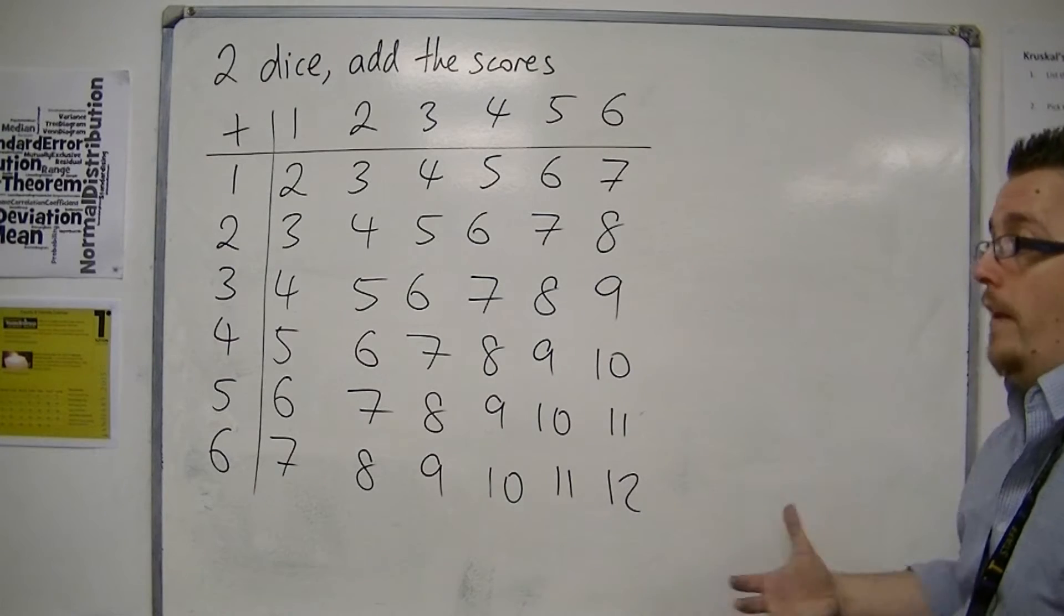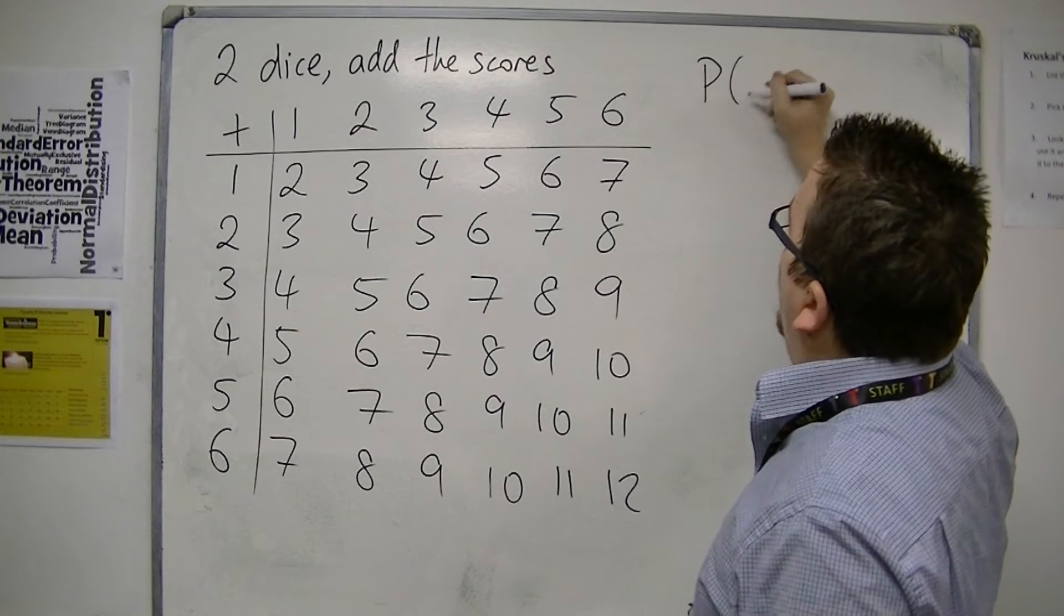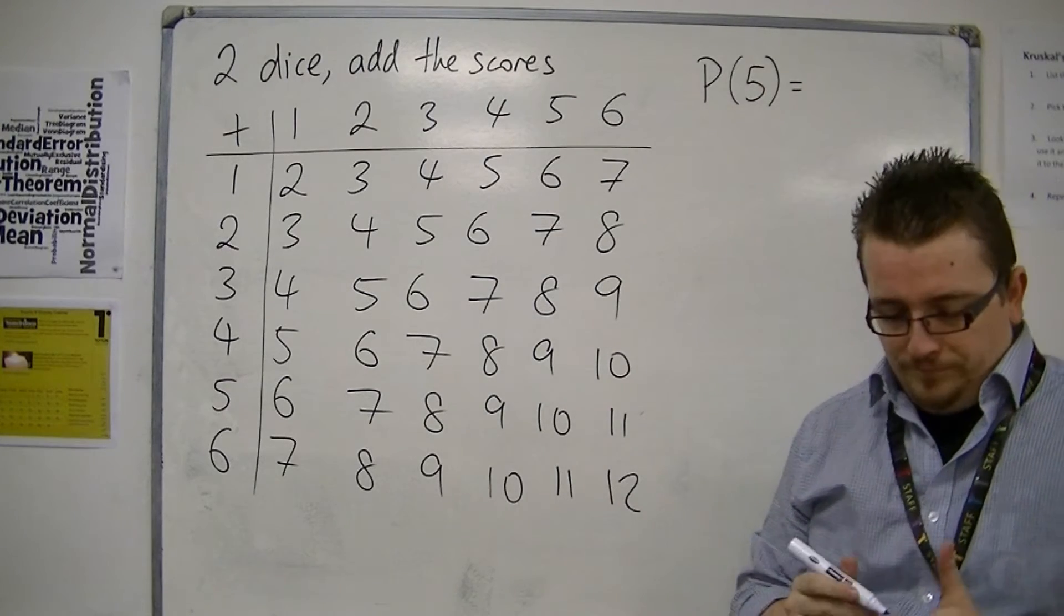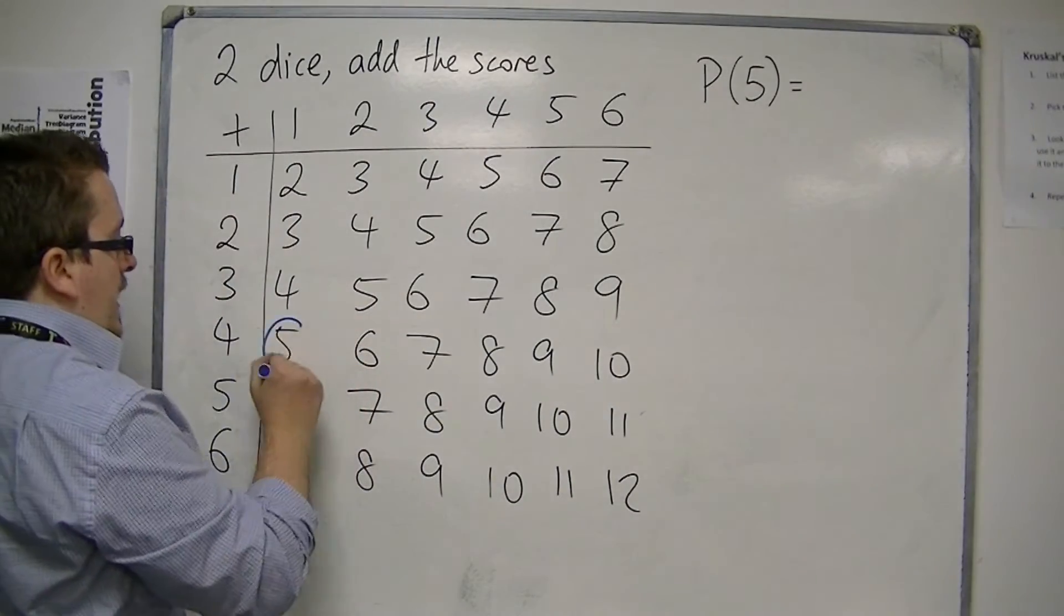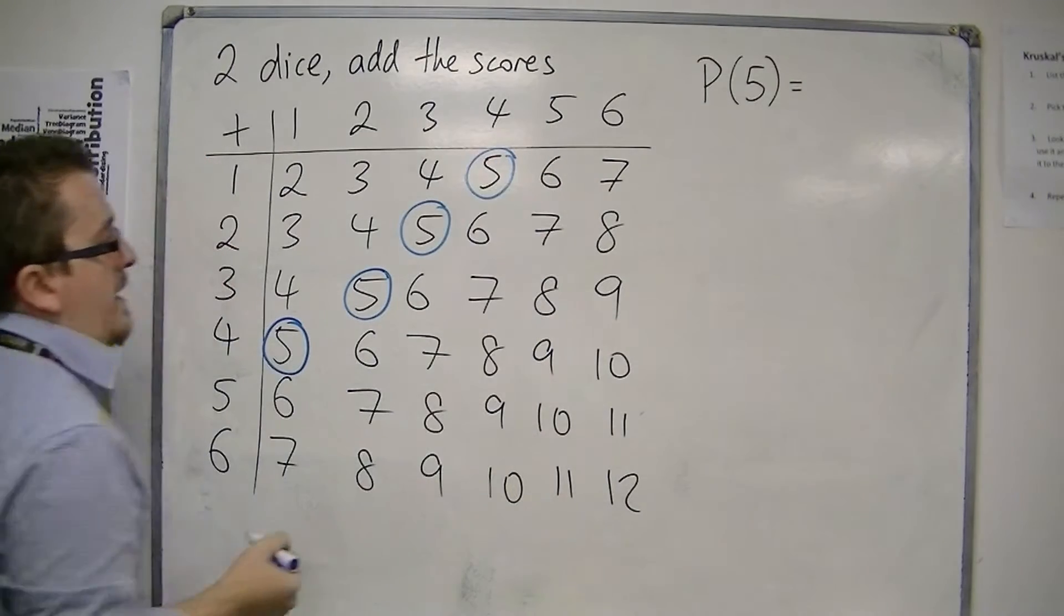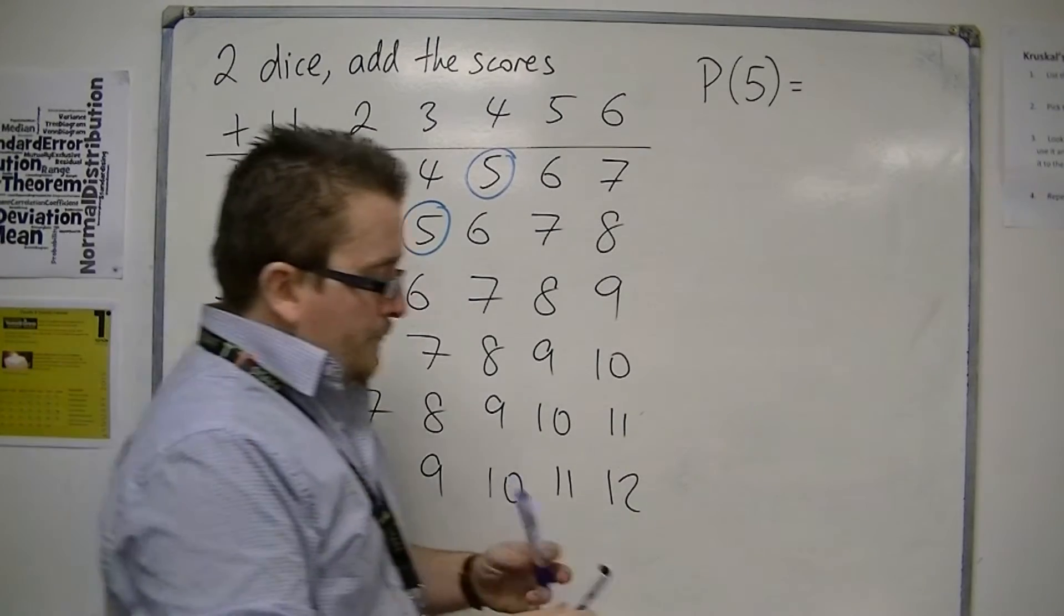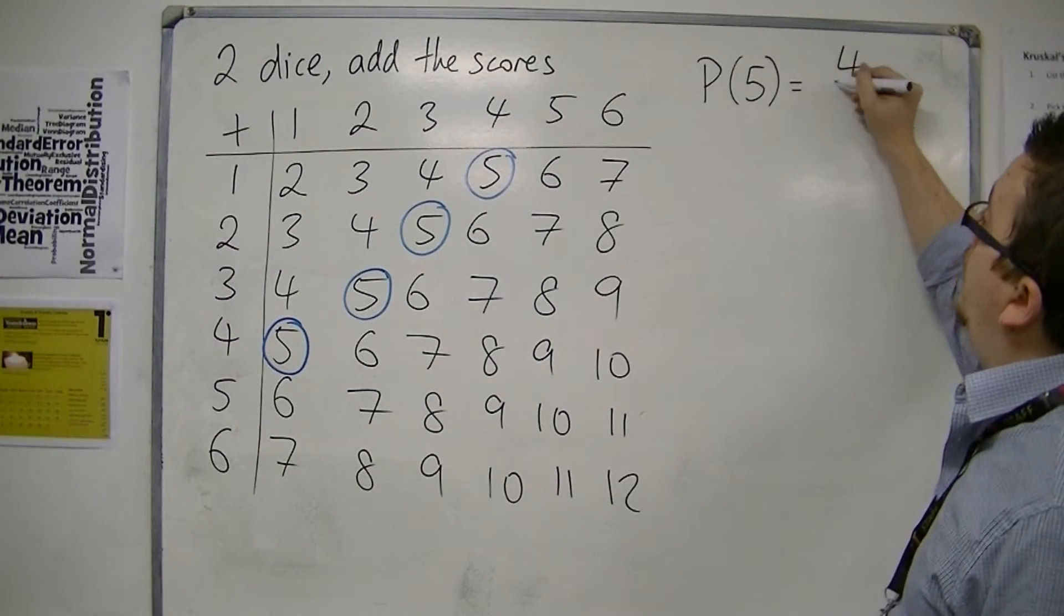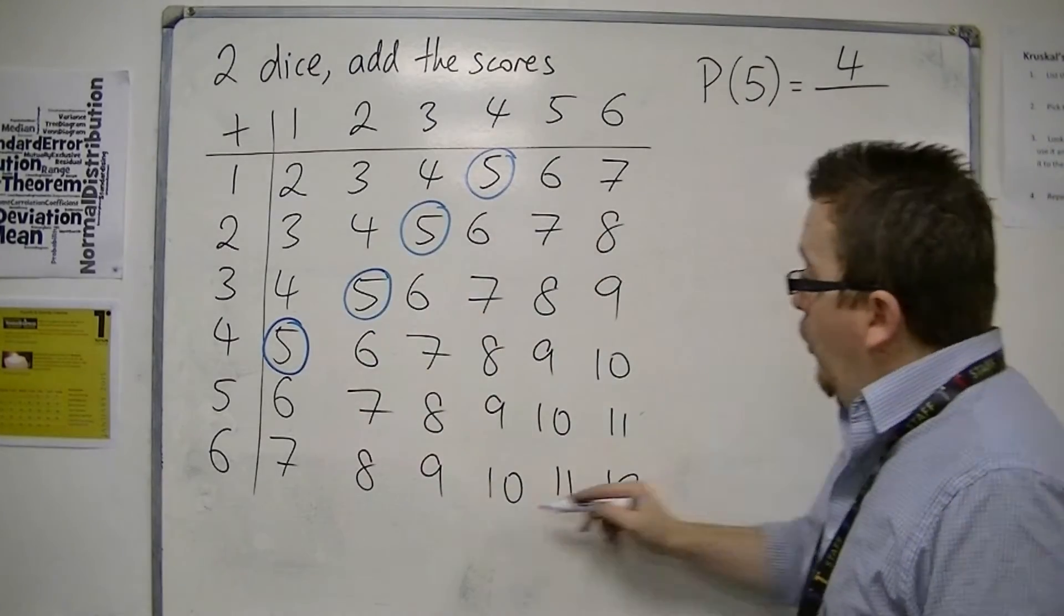Now, from this, you can then look at what is the probability of scoring a five, for example. So scoring a five, I can get a five there, one there, one there, and one there. And there are no other fives.